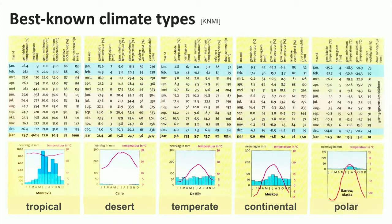And finally, we see the polar climate, with the lowest temperatures of course, but with an enormous difference between winter and summer. There is very little precipitation, mostly snow.